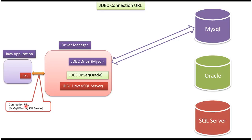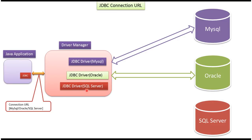Suppose the connection URL is Oracle database specific — then the driver manager will choose the Oracle-specific JDBC driver and establish a connection to the Oracle database. Suppose the connection URL is SQL Server specific — then the driver manager will choose the SQL Server-specific JDBC driver and establish a connection to the SQL Server. That is about JDBC Connection URL, thanks for watching.